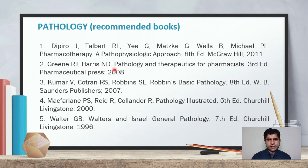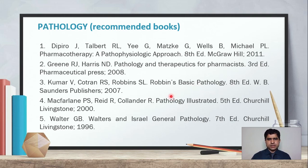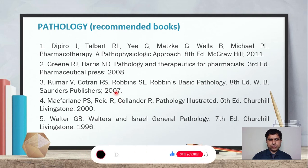The second book is Green R.J. and Harrison: Pathology and Therapeutics for Pharmacists, 3rd edition, Pharmaceutical Press, 2008 — a new edition is also available and can be purchased or found online. The third commonly studied book is Kumar V. and Cotran: Robbins Basic Pathology, 8th edition, which is widely used in different universities, and a new edition is available in both soft and hard copy.